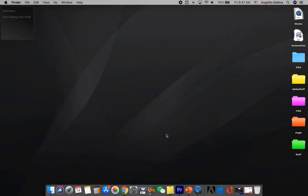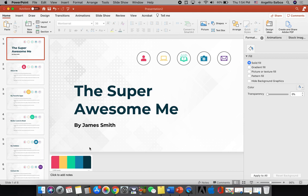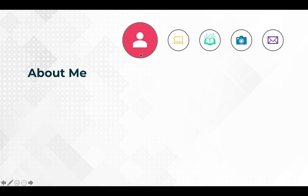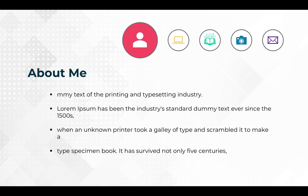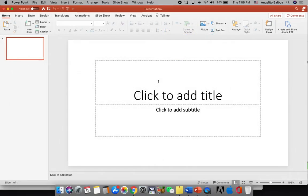For this activity, we are going to create a presentation that is stunning and unique. This is how it will look: this self-introduction has several icons on top that represent each of the slides. The first slide is about me, the second is your favorite apps, the third is about your favorite books, the fourth is about your hobbies, and the fifth is your contact details. Once you go to the next slide, the icon scales up, the title appears, and then the information shows up.